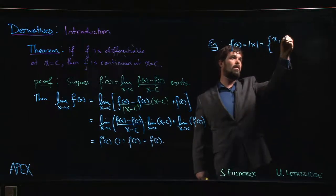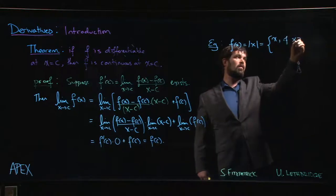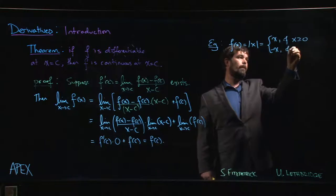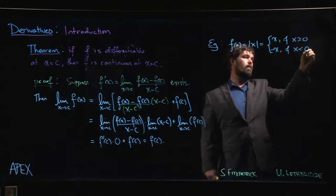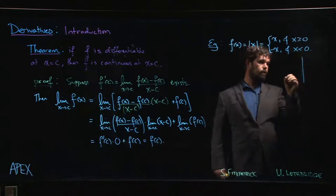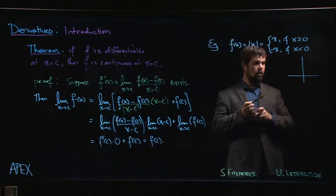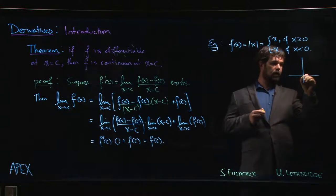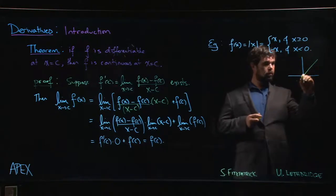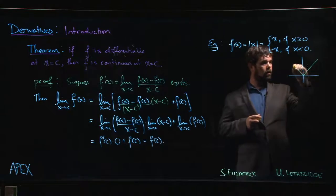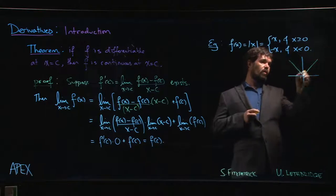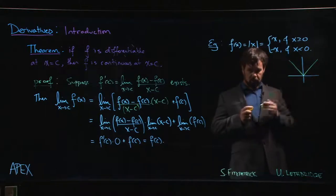So remember that this is a piecewise defined function. It's equal to x if x is bigger than or equal to 0, it's equal to minus x if x is less than 0. And we know what the graph looks like. So for x bigger than or equal to 0, it's just the line y equals x, slope 1. For x less than 0, it's the line y equals minus x, slope minus 1. And at 0, the graph comes to this point. There's a corner.